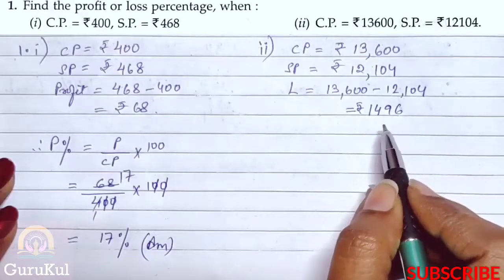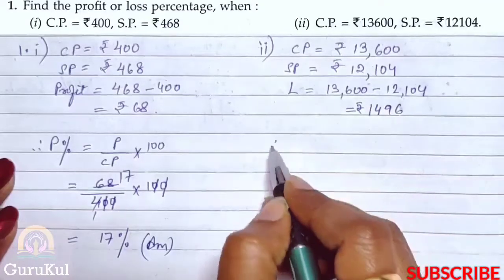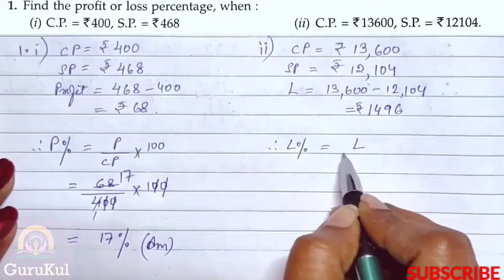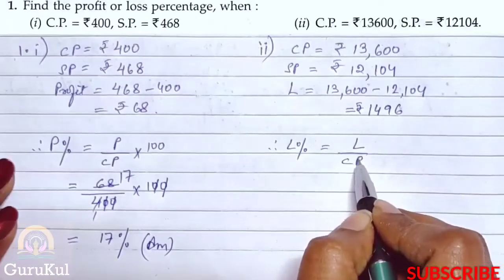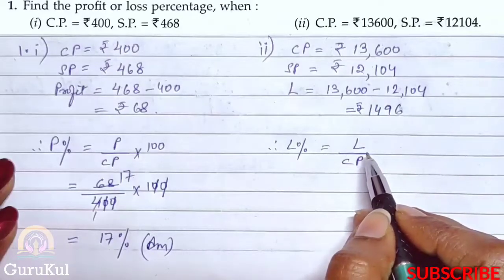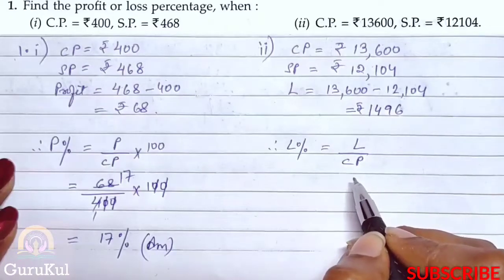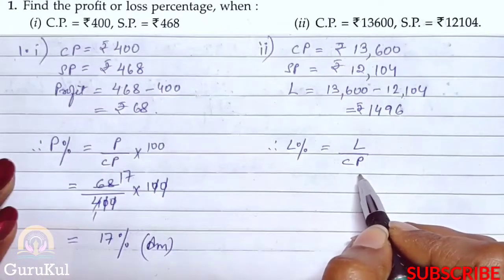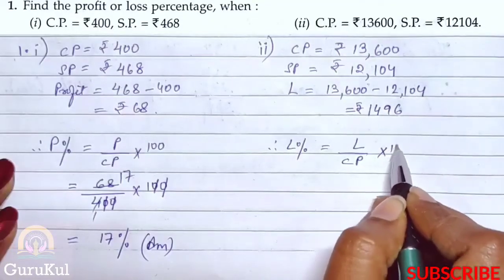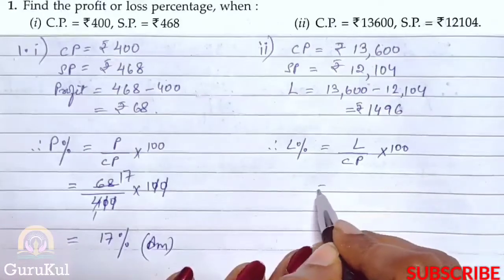Rs. 1,496 is the loss. Now we need to find out the loss percentage. Loss percentage is equal to loss divided by CP. Remember, whatever percentage we need to find out — whether it is loss or profit — it is always calculated on the cost price. And we multiply by 100 to convert it into a percentage.